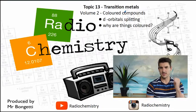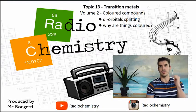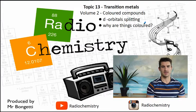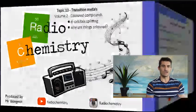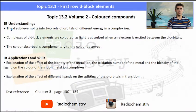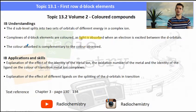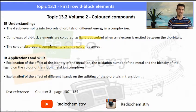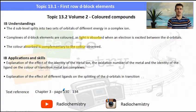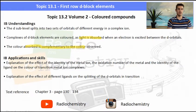Topic 13, volume 2, Coloured Compounds. We look specifically at d-orbitals and we need to address why things are coloured. IB understandings: we need to talk about d-orbital splitting and how that affects the colour, what is absorbed by these complexes and how that relates to the d-orbitals, and how the absorption is the complement of what is reflected. Make sure you check out the text reference, pages 130 to 134.